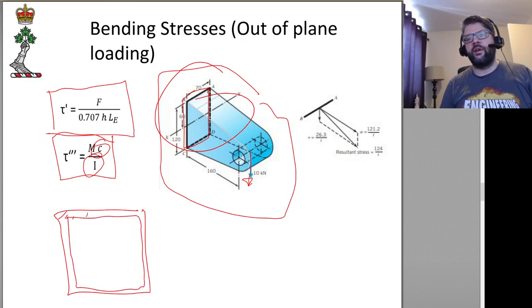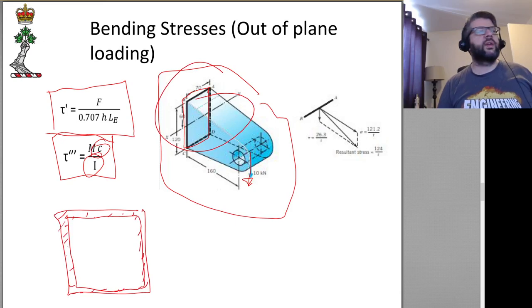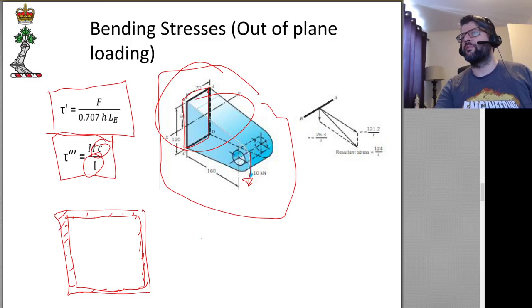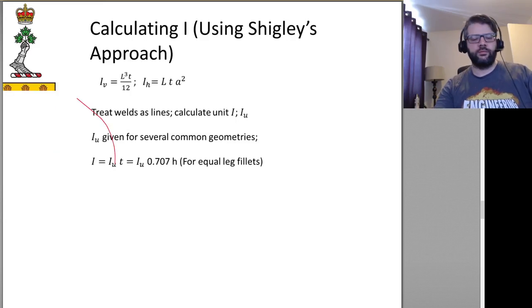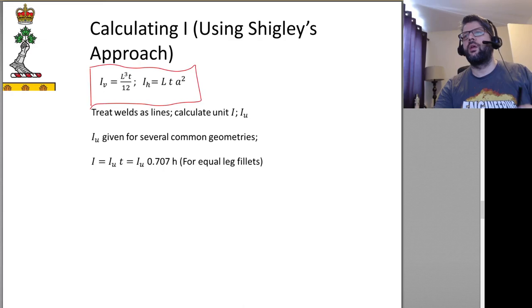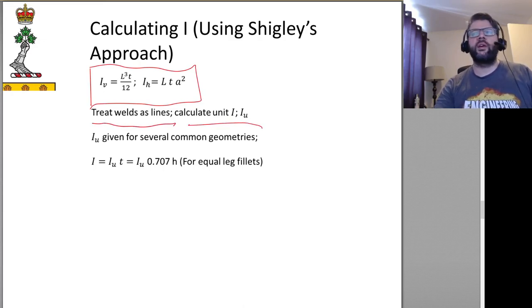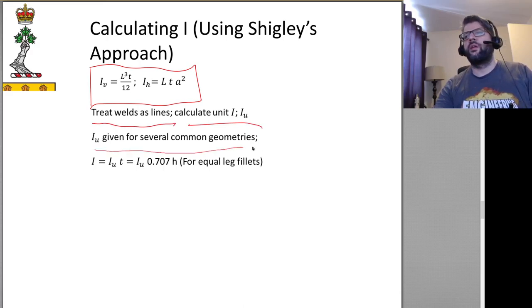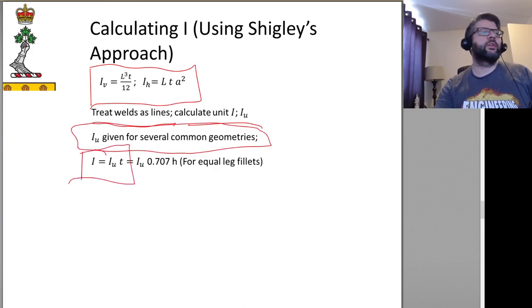We're basically calculating the I for a cross section that looks like this weld shape. Again, a lot of those are already calculated for us, so we don't need to worry too much about that. Treat the welds as lines, calculate the unit I. We're given the geometries and then find I by multiplying it by T.